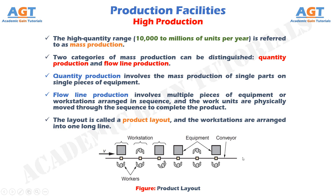The pure case of flow line production occurs when there is no variation in the products made on the line — every product is identical, and the line is referred to as a single model production line. To successfully market a given product, it is often beneficial to introduce feature and model variations so that individual customers can choose the exact merchandise that appeals to them. From a production viewpoint, these feature differences represent a case of soft product variety. The term mixed model production line applies to situations in which there is soft variety in the products made on the line.